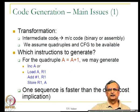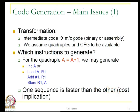The reason we look at DAGs is that local optimizations use directed acyclic graphs, so what we get after the optimization of the basic block is still a DAG and we must know how to generate machine code from DAGs. Machine code generation is a transformation from intermediate code to machine code — machine code could be in binary form or assembly form. It is just that if we generate assembly code we need an assembler to transform it to binary. In our lectures we will assume that we are generating assembly code. We will also assume quadruples and the control flow graph to be available to process them to generate code.